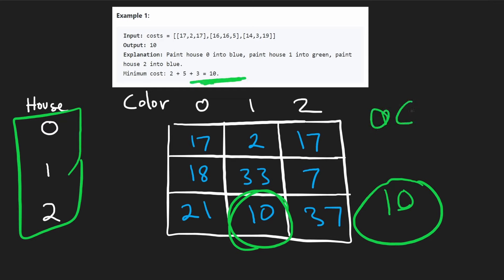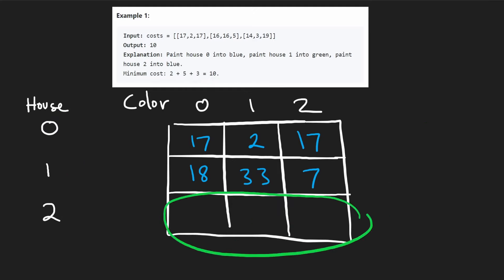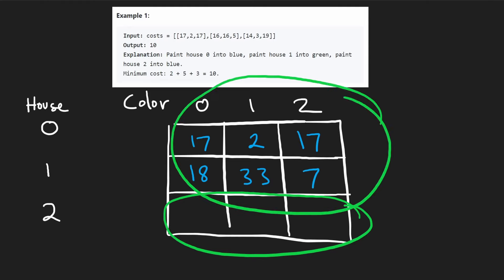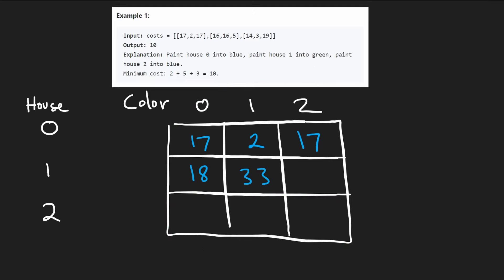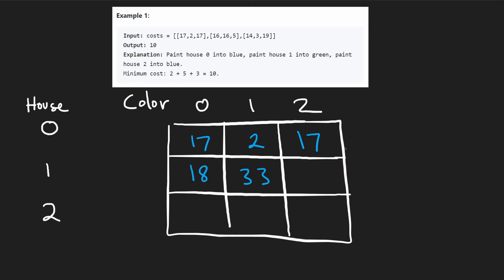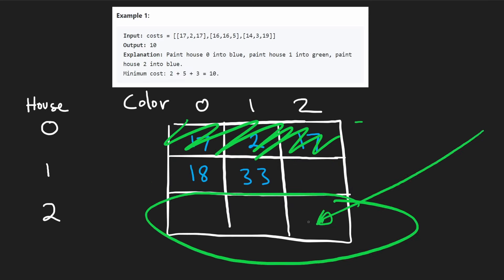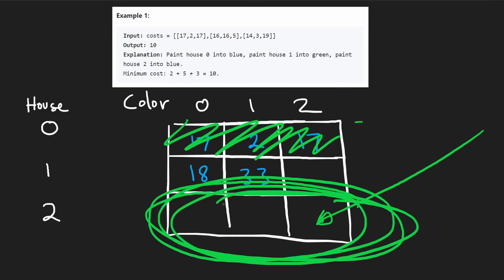We did this in O(N × 3) time complexity — so O(N) overall. The memory complexity was also O(N × 3), but we can optimize it: when computing each row, we only need the previous row. So we just maintain a single row of three values at a time, replacing it after each iteration, which gives us constant O(1) memory complexity.